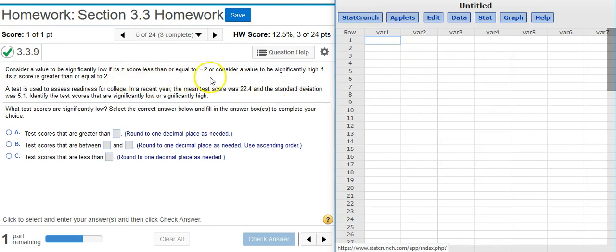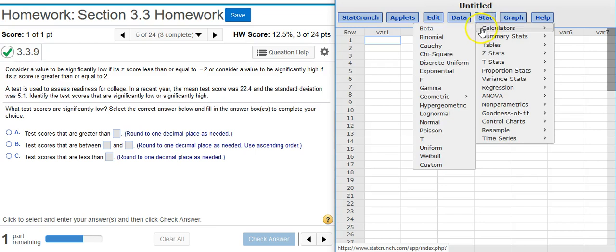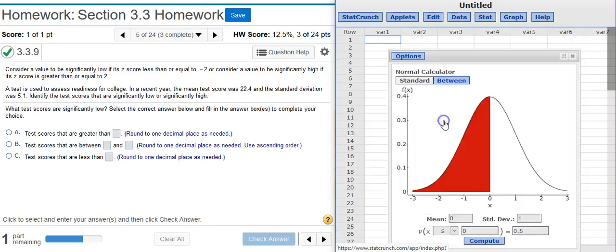First, since we're dealing with z-scores, we need to get our normal distribution calculator out. To do that, we're going to go to Stat, Calculators, Normal. Here's my normal calculator. You'll note that the default values here are for the standard normal distribution.